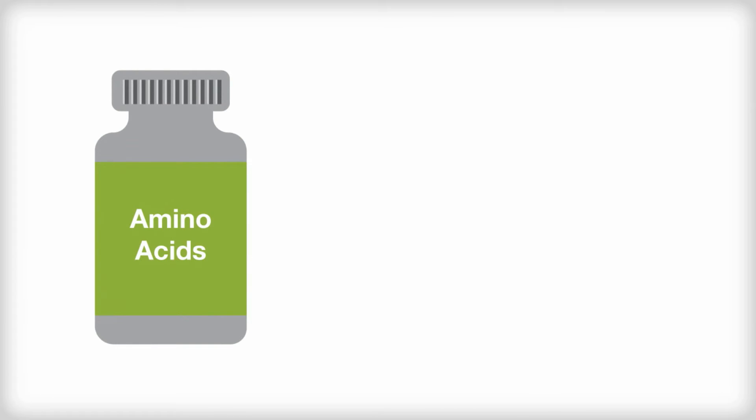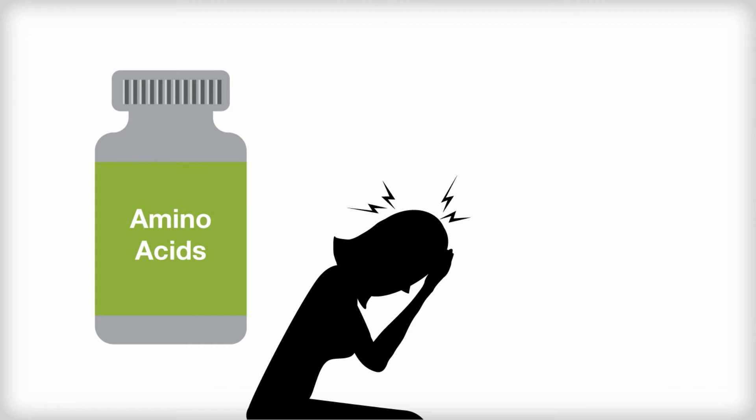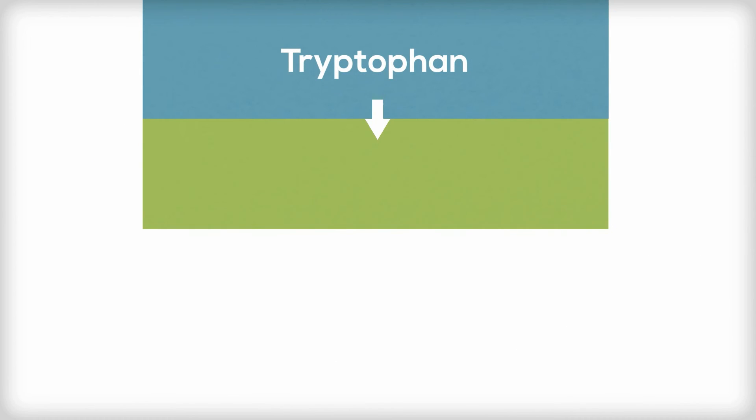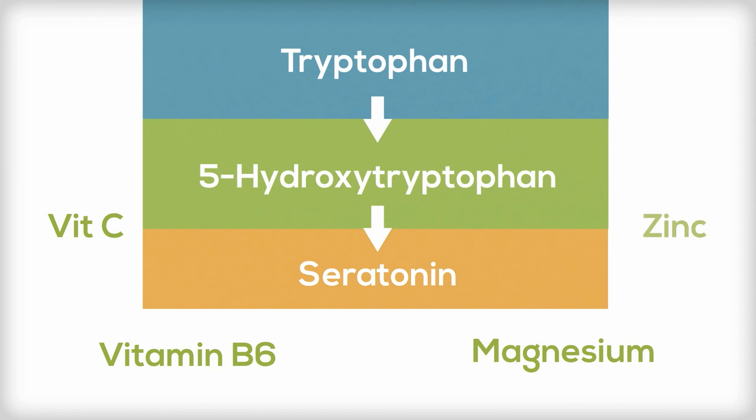Some amino acids and their intermediates are precursors to neurotransmitters that can aid in mood stabilization. For example, tryptophan is converted to 5-hydroxytryptophan, and then to serotonin, in the presence of cofactors like vitamin C and B6, magnesium and zinc.